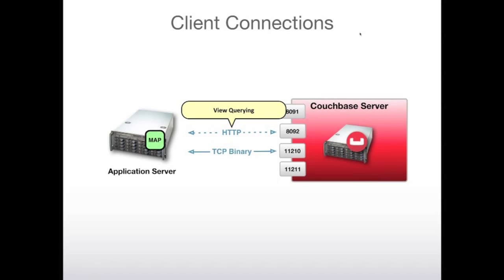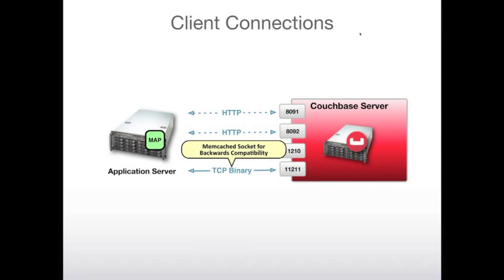For view querying, we query against port 8092. You can query views yourself by using curl or Postman, and that is not a persistent connection — it's created for each query. For backwards compatibility with Memcached, port 11211 is used. On the server side, something called Moxi runs in front of Couchbase server, retaining the cluster map and redirecting requests to the appropriate server just like the Couchbase SDKs do.